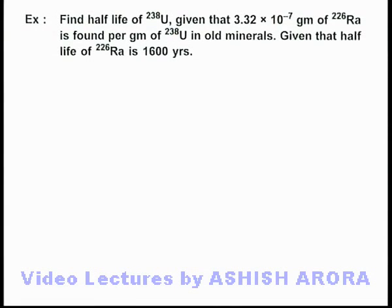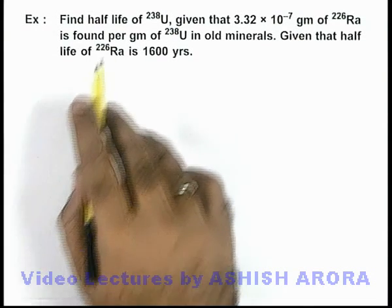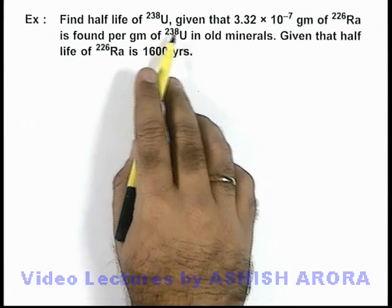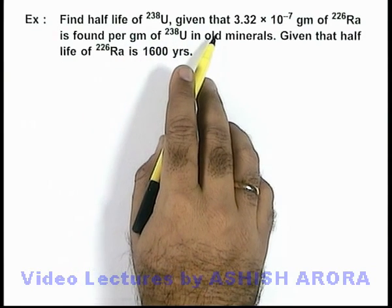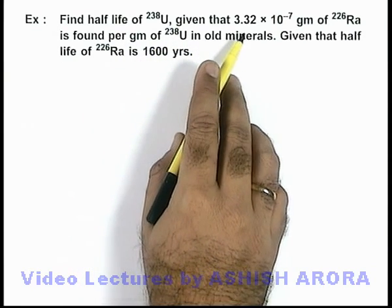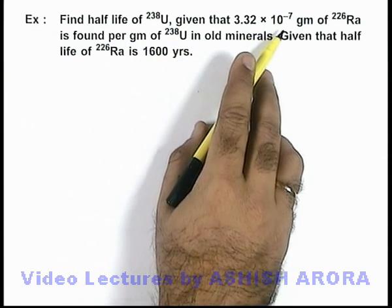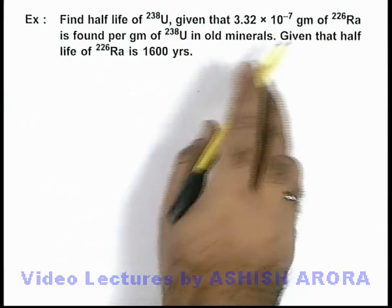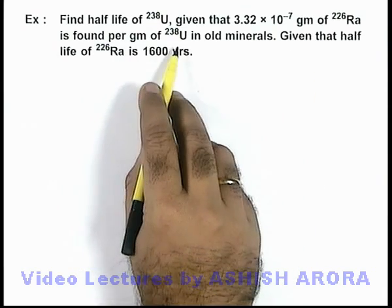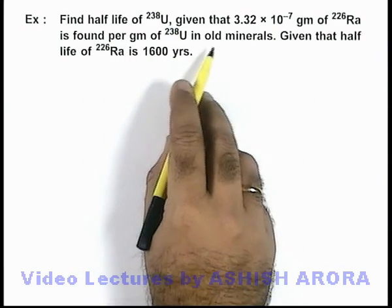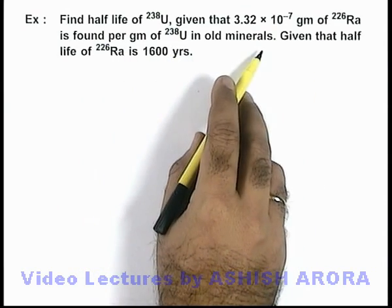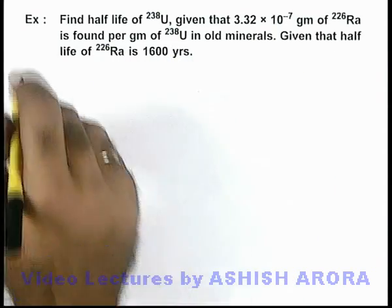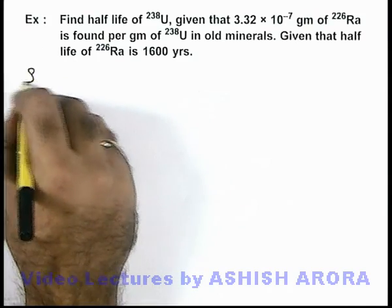In this example we are required to find the half-life of uranium. It is given that 3.32 × 10⁻⁷ grams of radium is found per gram of uranium in old minerals. We are also given the half-life of radium.